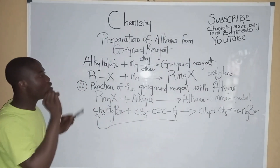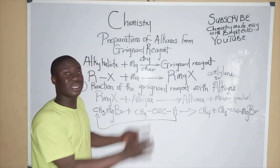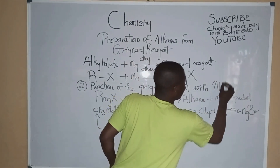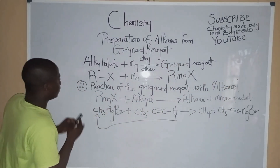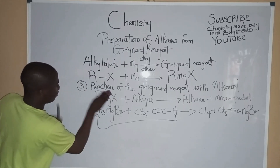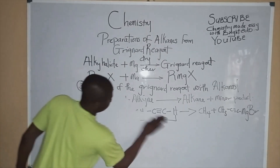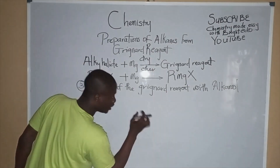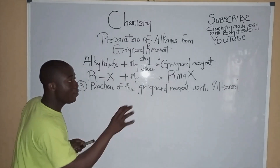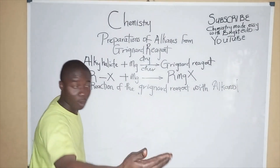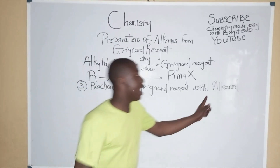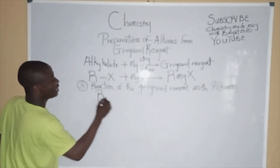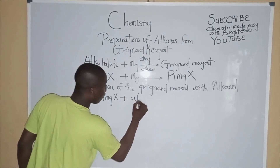Now let's talk about reaction 3: reacting the Grignard Reagent with an alkanol. Alkanols are compounds formed from alcohols, and alcohols can be in three forms: alkanol, alkenol, or alkynol. Let's talk about reacting the Grignard Reagent with an alkanol.